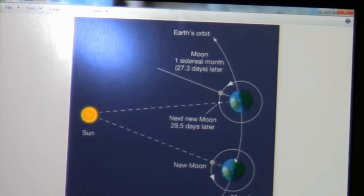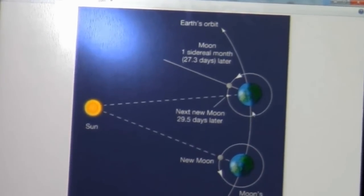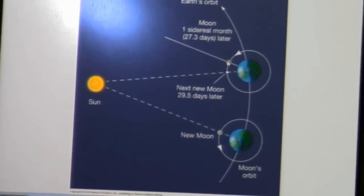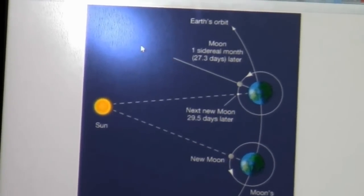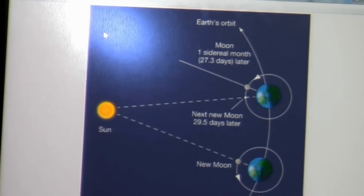Eventually it gets back to the same position with respect to the distant stars. And you can see it up here. Over that month, the earth is moving in its orbit around the sun. Here's the moon back to the exact same geometric position with respect to the earth and with respect to the distant stars. That's one sidereal month. It's the true rotation period of the moon.